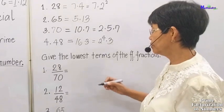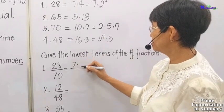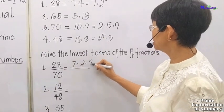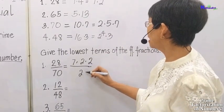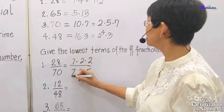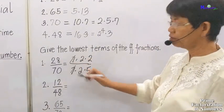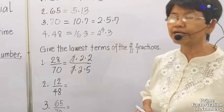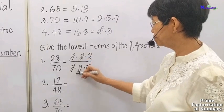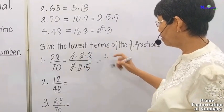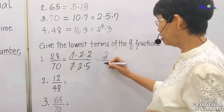Now let us get the lowest terms of the following fractions. 28 is 7 times 2 times 2, and 70 is 2 times 5 times 7. All the numbers common between the numerator and denominator are cancelled out, so we have 2 over 5 as our lowest terms.